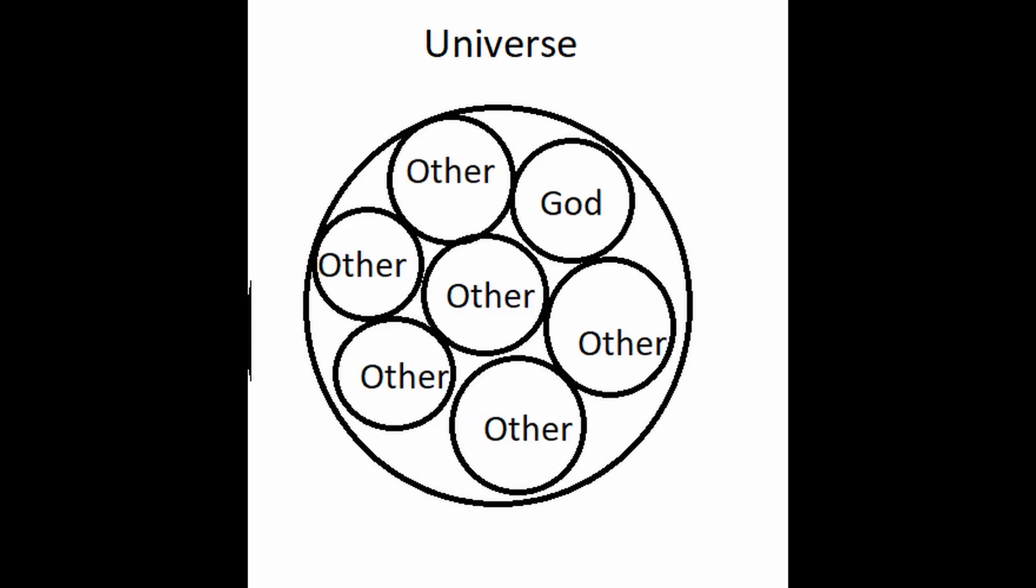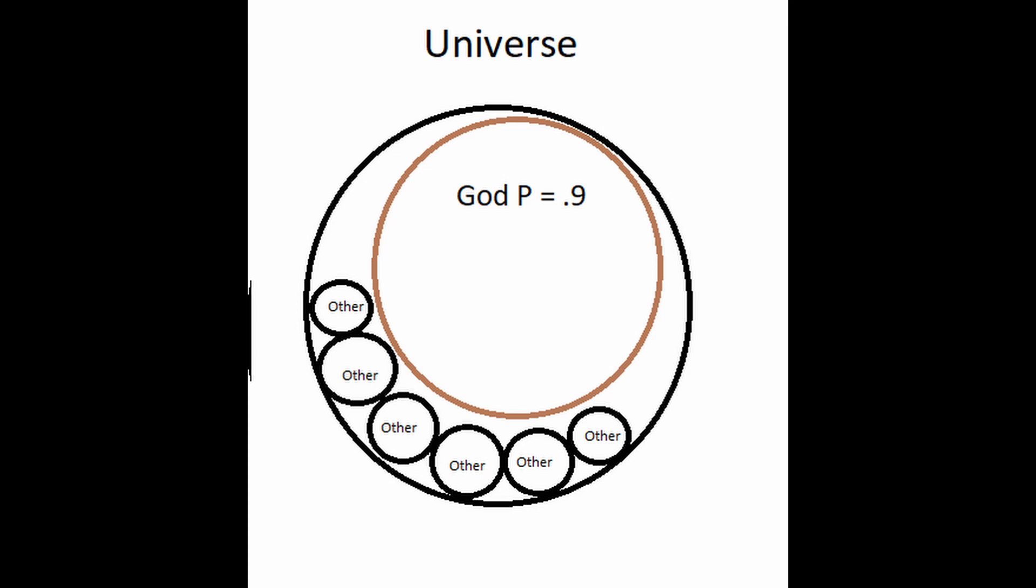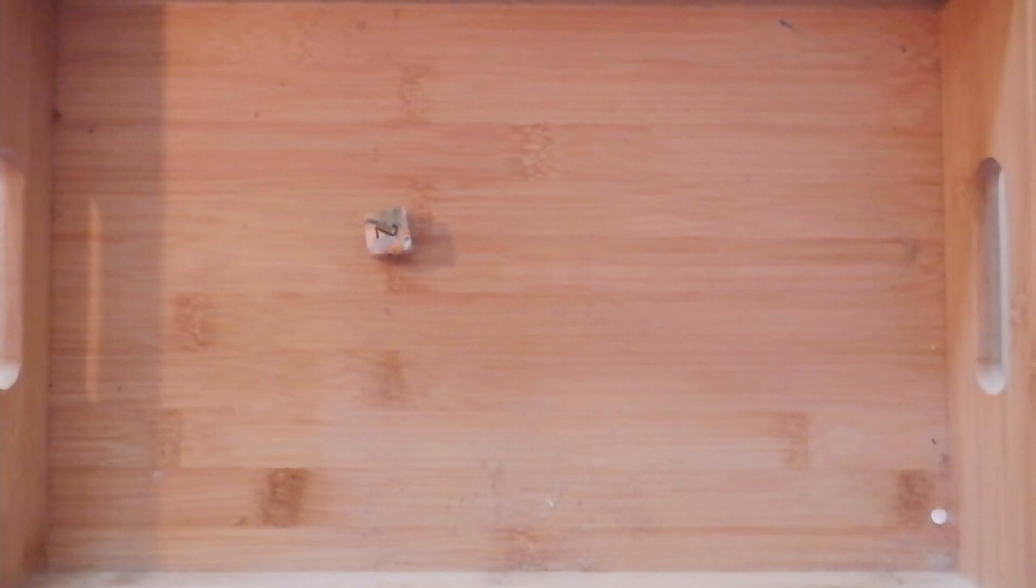In order to prove the likelihood of fine tuning by God, you would first have to either discredit every single other hypothesis for the finely tuned universe, or you would need to somehow provide proof of the divine creation hypothesis. The finely tuned universe alone would not act as proof of God.